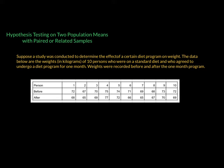Just by looking at the values and seeing them generally go down is not sufficient to say the program is really effective — we have to perform a hypothesis test. Weights were recorded before and after the one-month program. We can see the weight values before the program, and after the program — for example, 68, 65, and so on up to 69 — coming from the same set of people, making this an example of related samples.